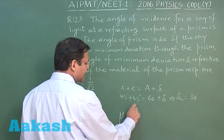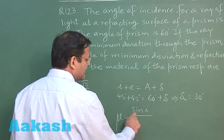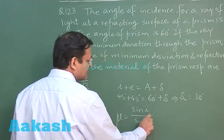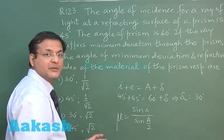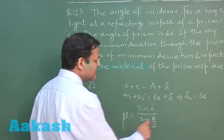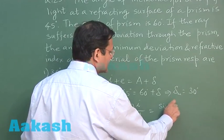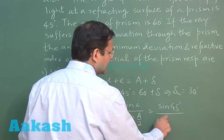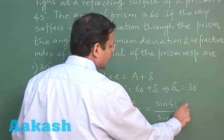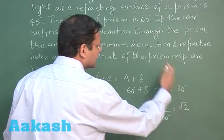And then they are asking to calculate the refractive index. You know that refractive index is sine i by sine r, and sine r is nothing but A by 2 for the case of minimum deviation. The value of i has been given to be directly as 45 degree. So this is sine 45 upon sine 30 degree. What do you think, what will you get? You will be getting root 2. So these are the two answers.